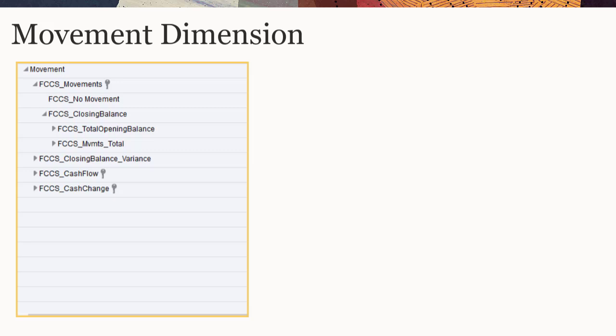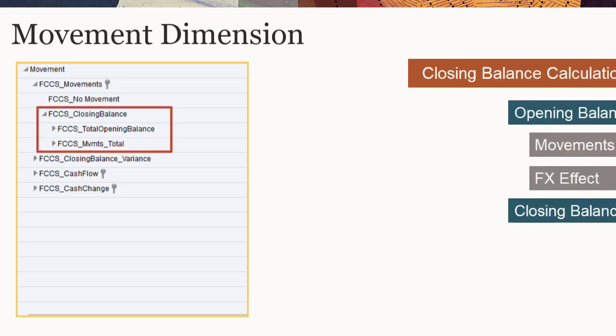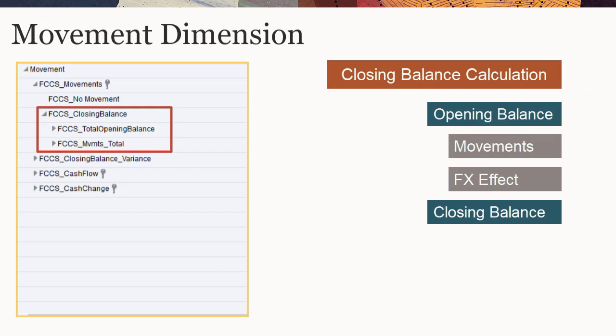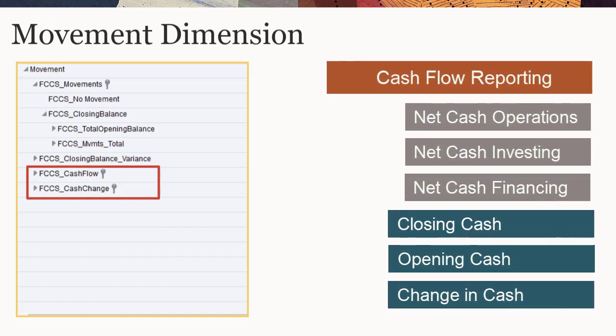The Movement dimension tracks the components of the current period closing balance for your accounts and organizes your movement data to support cash flow reporting. The Closing Balance hierarchy calculates the current period closing balance from the opening balance and current period movements. The Cash Flow and Cash Change hierarchies organize and format your data to support indirect cash flow reports.